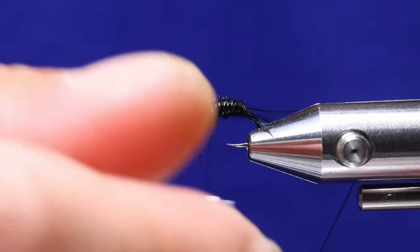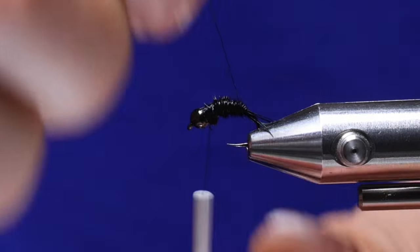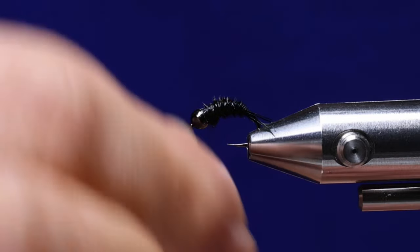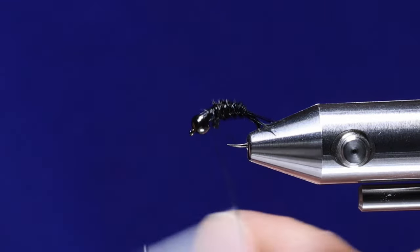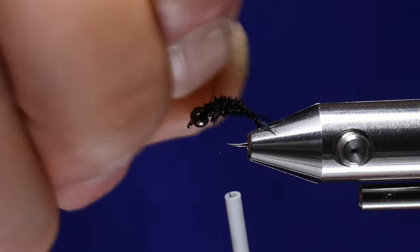Now take that small black wire and then you're going to counter wrap it. It's basically to make the pheasant tail a little bit more durable. Then capture the wire and then helicopter it off.